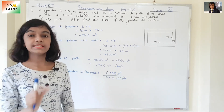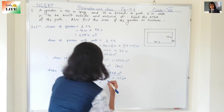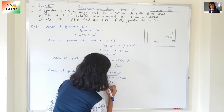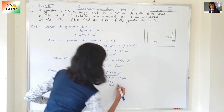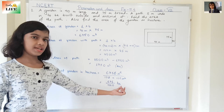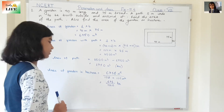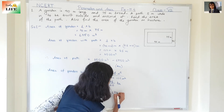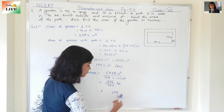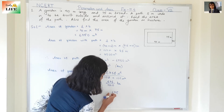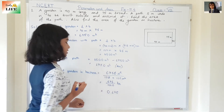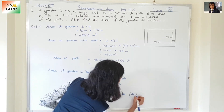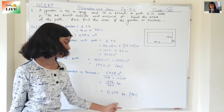The symbol of hectare is ha — small h and small a. So we have 6,750 divided by 10,000. That gives us 6,750 by 10,000. There are four zeros, so the decimal will be placed before four digits. Moving the decimal: 0.675 hectare. This is the area of the garden in hectare.